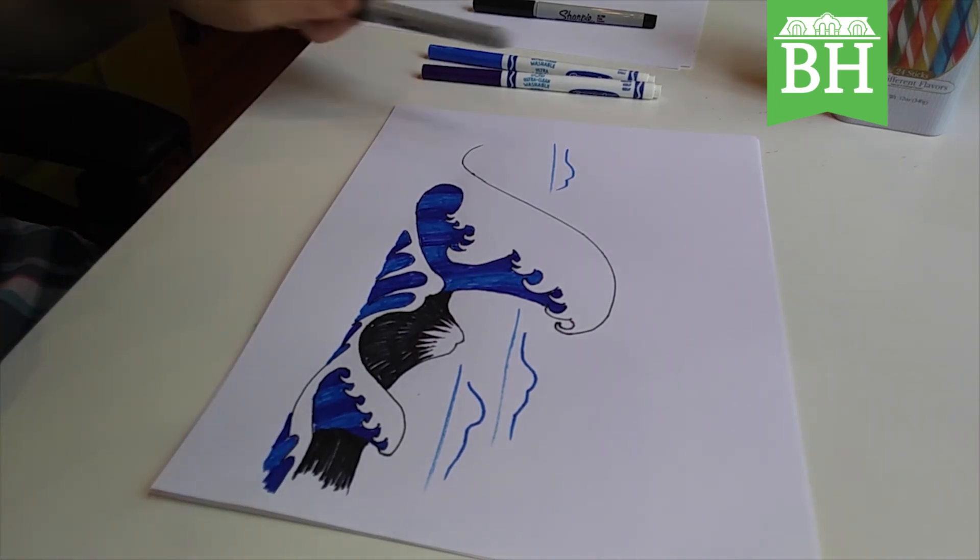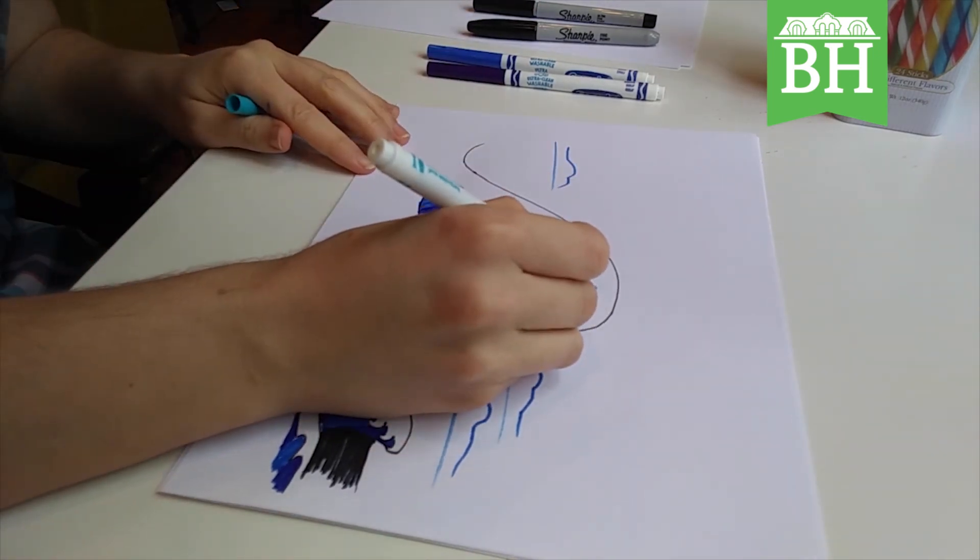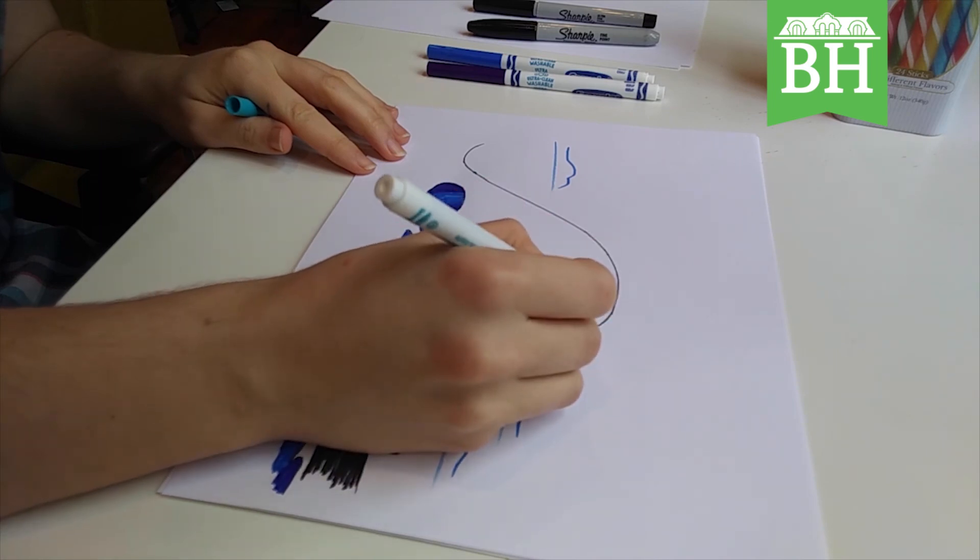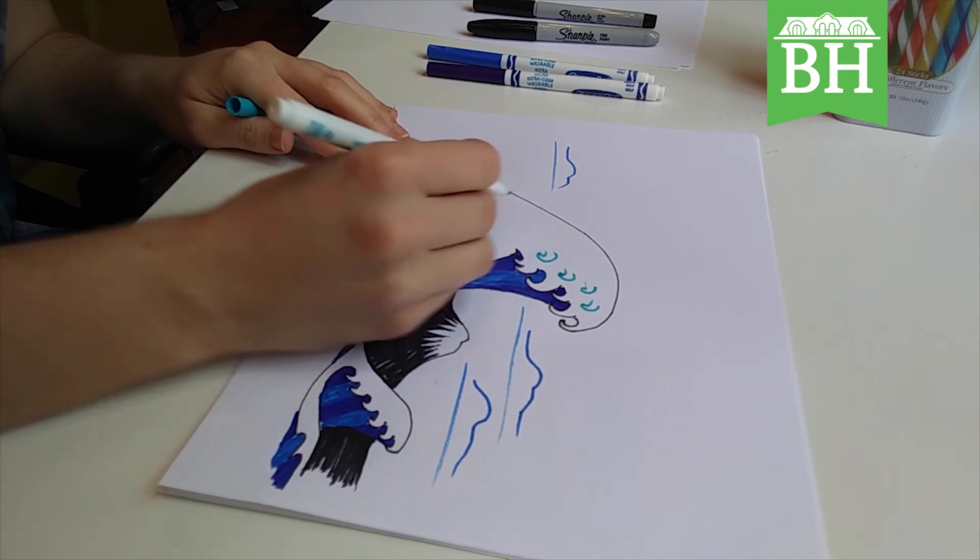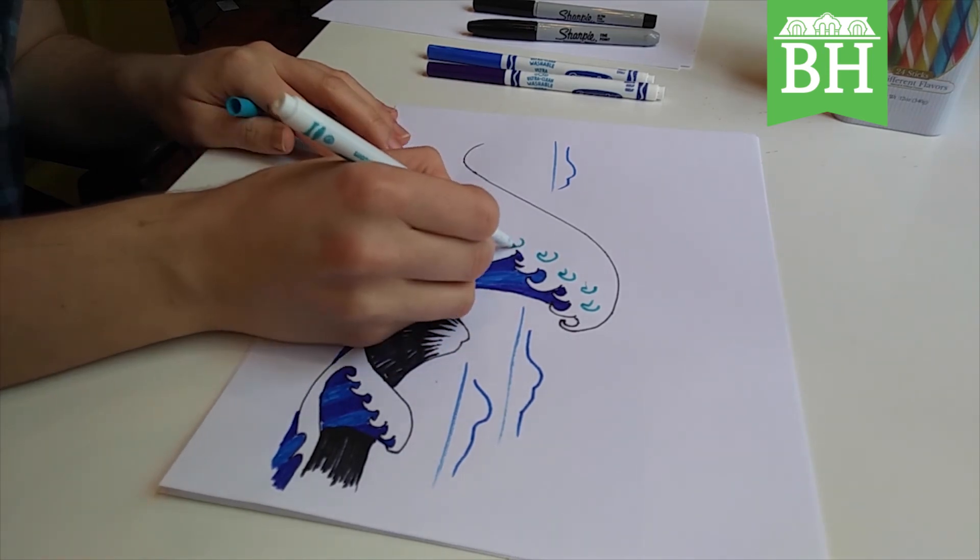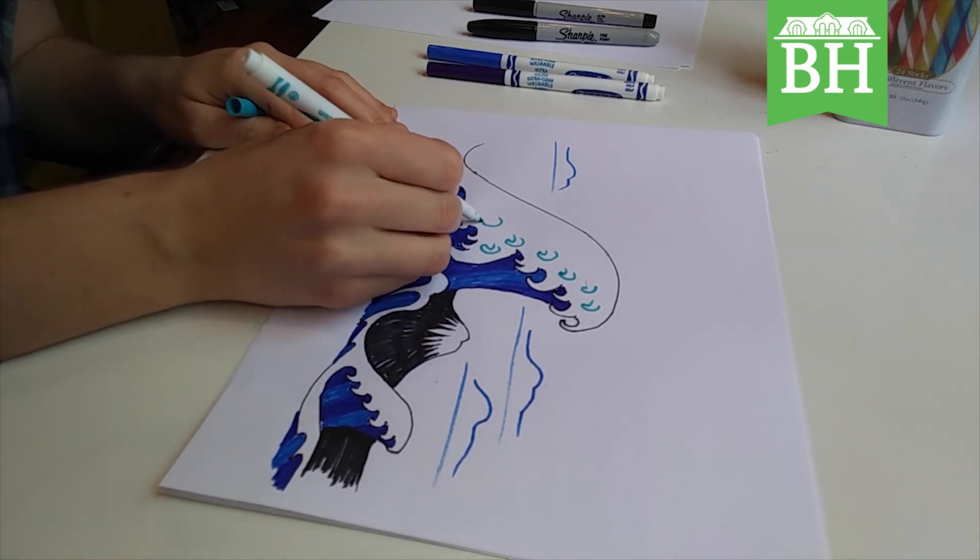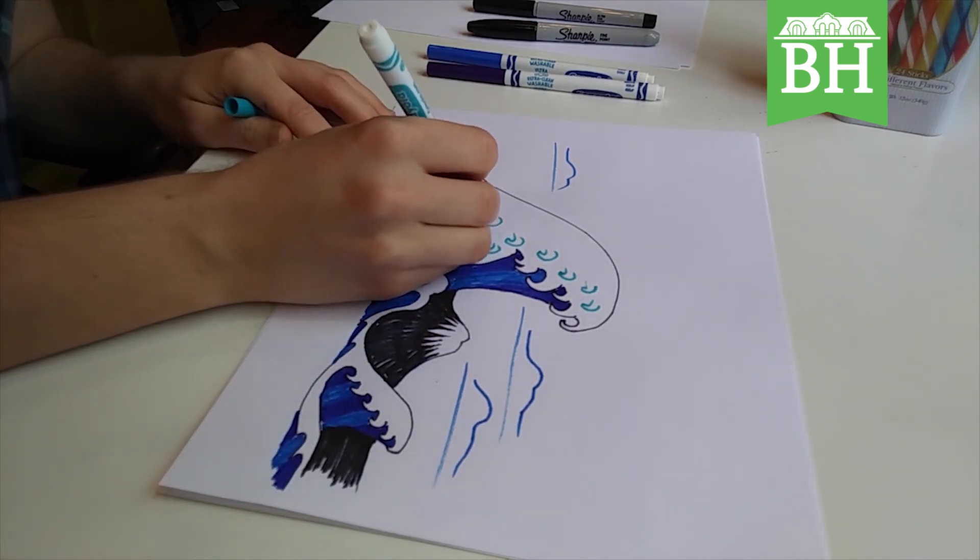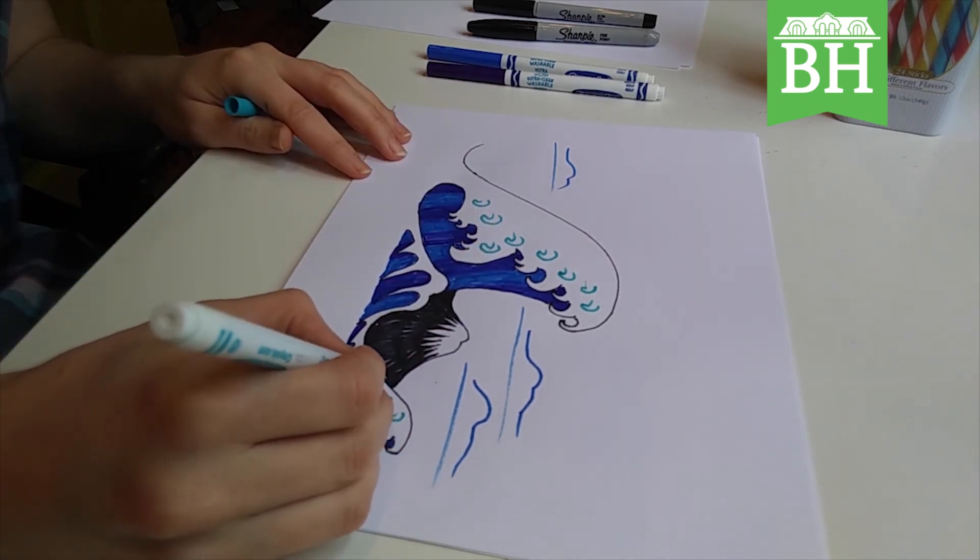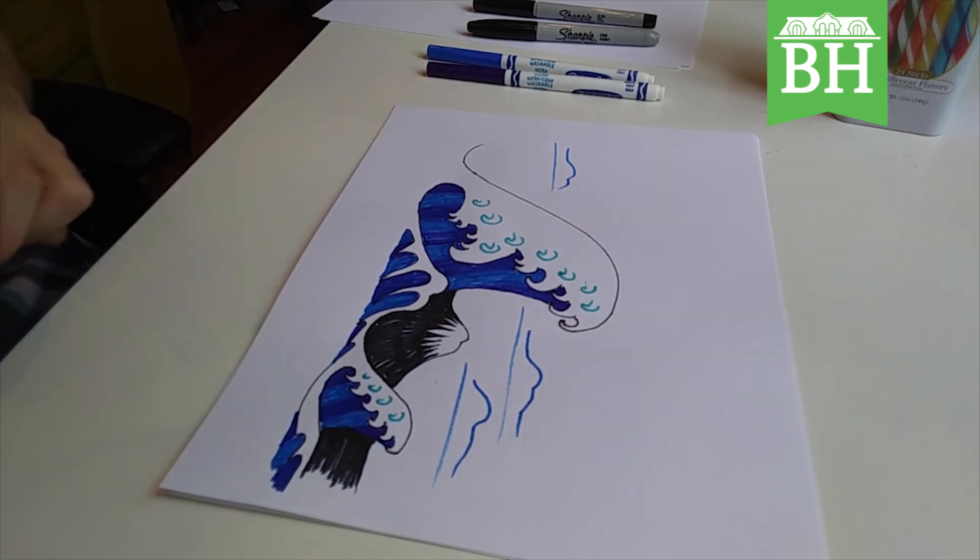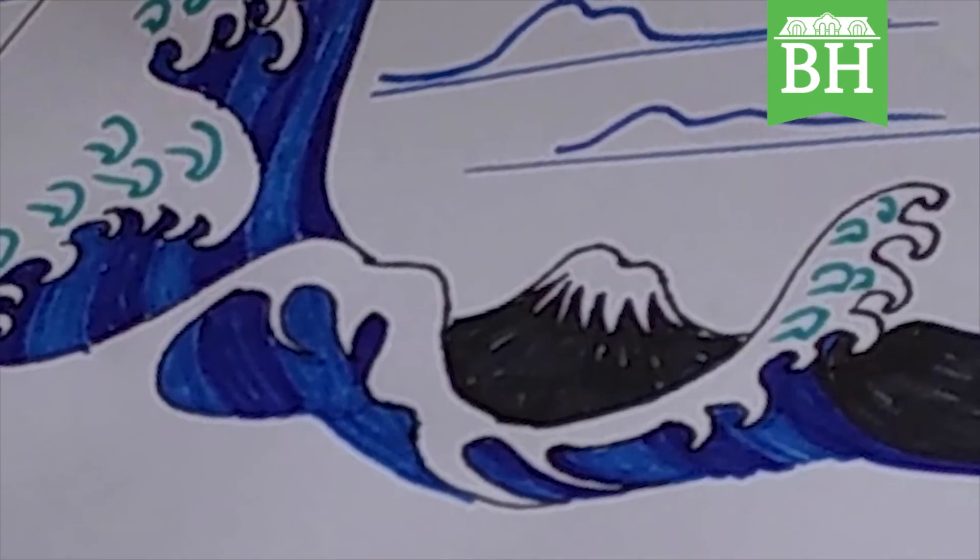Just to add a little texture to those waves, I'm going to get my turquoise and I'm just going to draw some little hooks in turquoise. And that's my drawing of a wave.